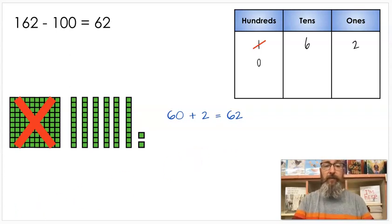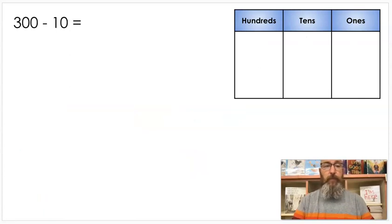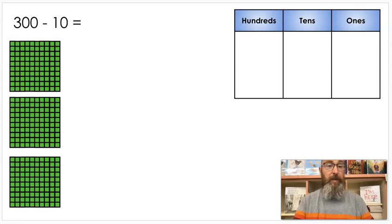All right. The next one, we'll be doing some regrouping. 300 minus 10. So first I'm building my 300. I'm putting my 300 up here. I have 3 hundreds.